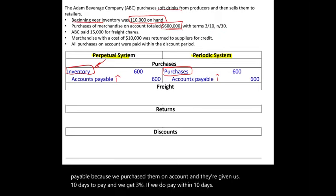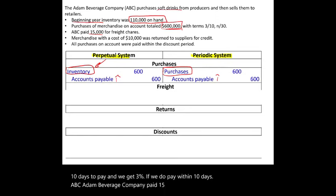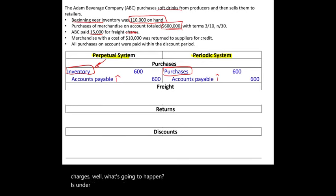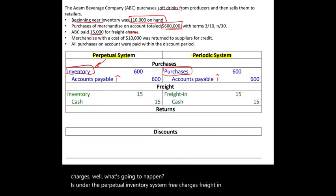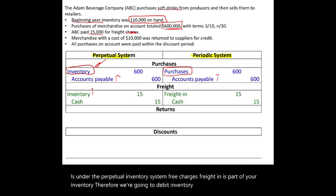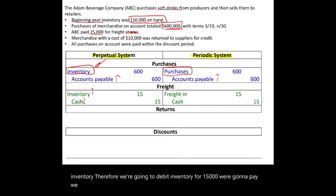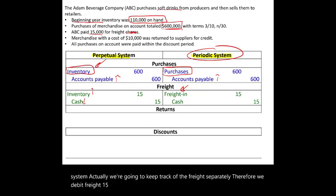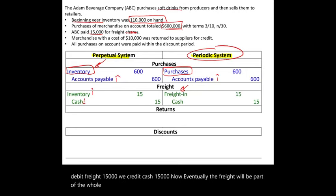Adam Beverage Company paid $15,000 for freight charges. Under the perpetual inventory system, freight in is part of your inventory — we debit Inventory $15,000 and credit Cash $15,000. Under the periodic inventory system, we keep track of freight separately — we debit Freight In $15,000 and credit Cash $15,000. Eventually, the freight will be part of inventory and cost of goods sold, but for now we keep track of it separately.